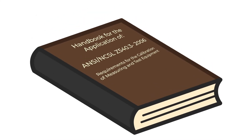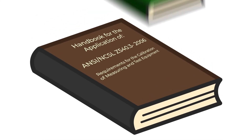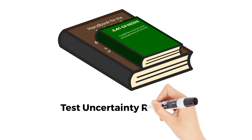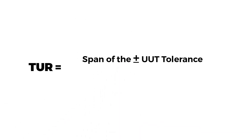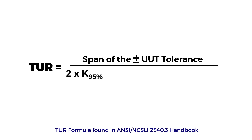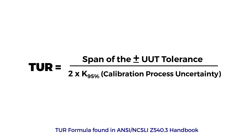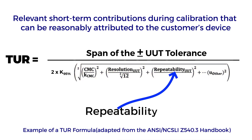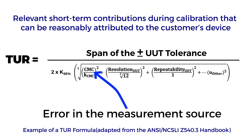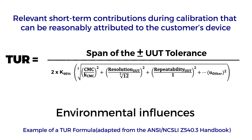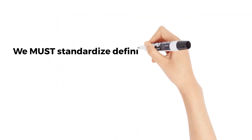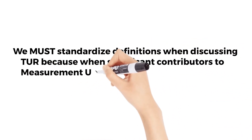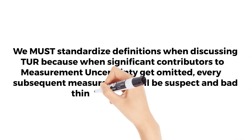Many of the decision rules found in documents such as the ANSI-Z540.3 Handbook and the ILAC-G8 use Test Uncertainty Ratio, or TUR, to help calculate their measurement risk. TUR is defined in the Handbook as the ratio of the span of the tolerance of a measurement quantity subject to calibration to twice the 95% expanded uncertainty of the measurement process used for calibration. The formula for TUR consists of the span of the tolerance in the numerator. The denominator includes short-term contributions incurred during the calibration, such as repeatability, resolution, error in the measurement source, operator error, error in correction factors, environmental influences, and others. We must standardize definitions when discussing TUR because when significant contributors to measurement uncertainty get omitted, every subsequent measurement will be suspect and bad things may happen.